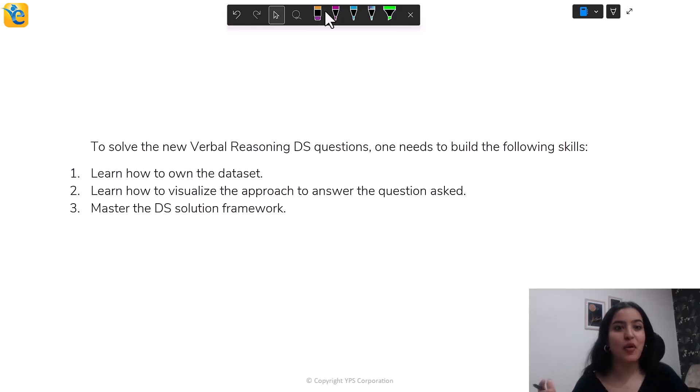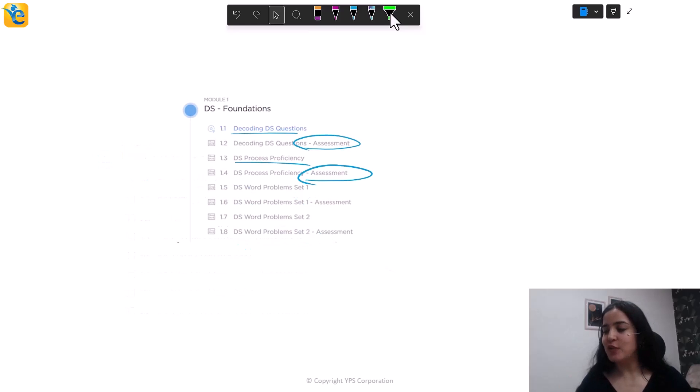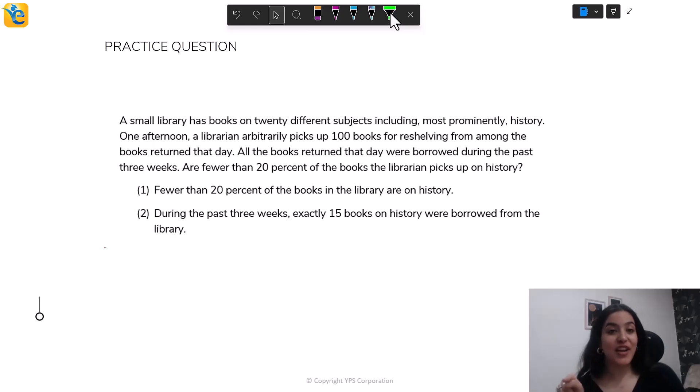Now, these are the things you need to be able to solve these new question types. You need to learn how to own the data set. As we said, learn how to visualize the approach to answer the question. Do not jump into statements straight away and master the DS solution framework. If data sufficiency as a question type, the framework is not clear, then whatever type there may be, Quant or verbal, you will be confused. So that has to happen. Now, EGMAT students build these skills in a progressive manner in a dedicated course, which is specialized for data sufficiency questions. Now, watch this video that I'm linking above to learn more about all of this. Now, I'm not going to leave you just yet. You have a practice question to solve. So try your hand at this official hard verbal reasoning question with a flair of Quant. Be sure to own the data set first. For this, immerse yourself in the situation. Think of yourself as the librarian who's talked about in this situation. You'll surely have fun and stay tuned for a solution to this question. Happy learning.